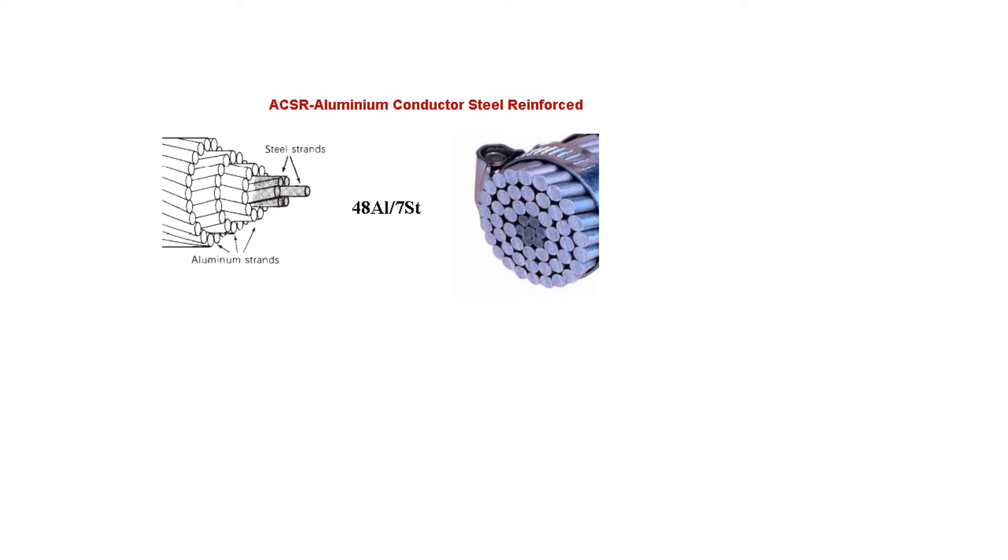Also shown here, these are the steel ones and these are the Aluminium Conductors. The name is given like here it is said 48 Aluminium, that means these outer ones have 48 strands and there are 7 steel strands.